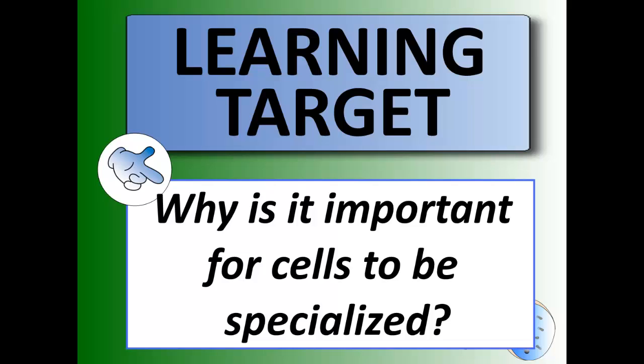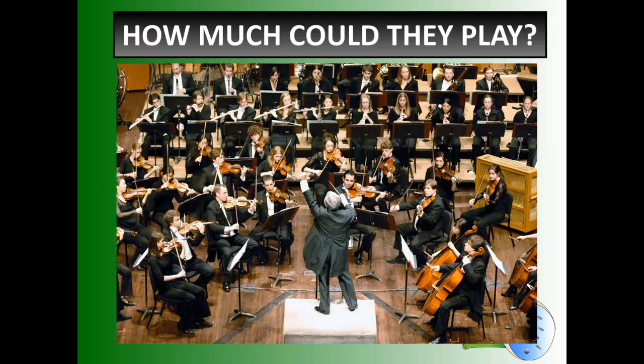Welcome to the final screencast of Section 2 in the Cells and Systems Unit. This screencast is going to look at specialization of cells and why it is important for cells to be specialized, specifically in the human body. The first analogy I like to make regarding specialization is this wonderful orchestra.